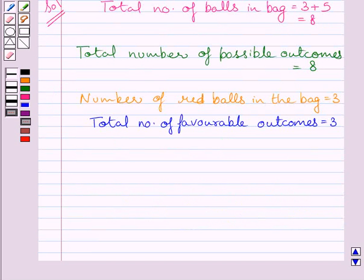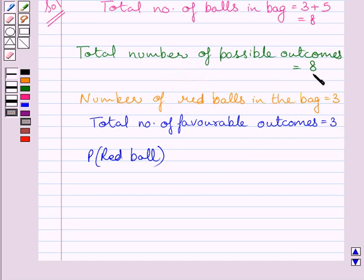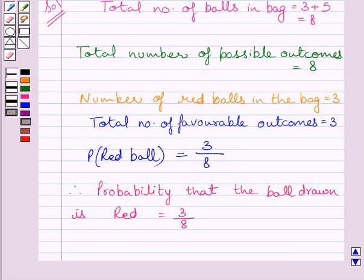From the key idea, we know probability of an event E is equal to number of outcomes favorable to E upon total number of possible outcomes. We have to find the probability of getting a red ball. Here total number of favorable outcomes is equal to 3 and total number of possible outcomes is equal to 8. So probability of getting a red ball is equal to 3 upon 8. Thus, probability that the ball drawn is red is equal to 3/8. This completes the first part of the question.